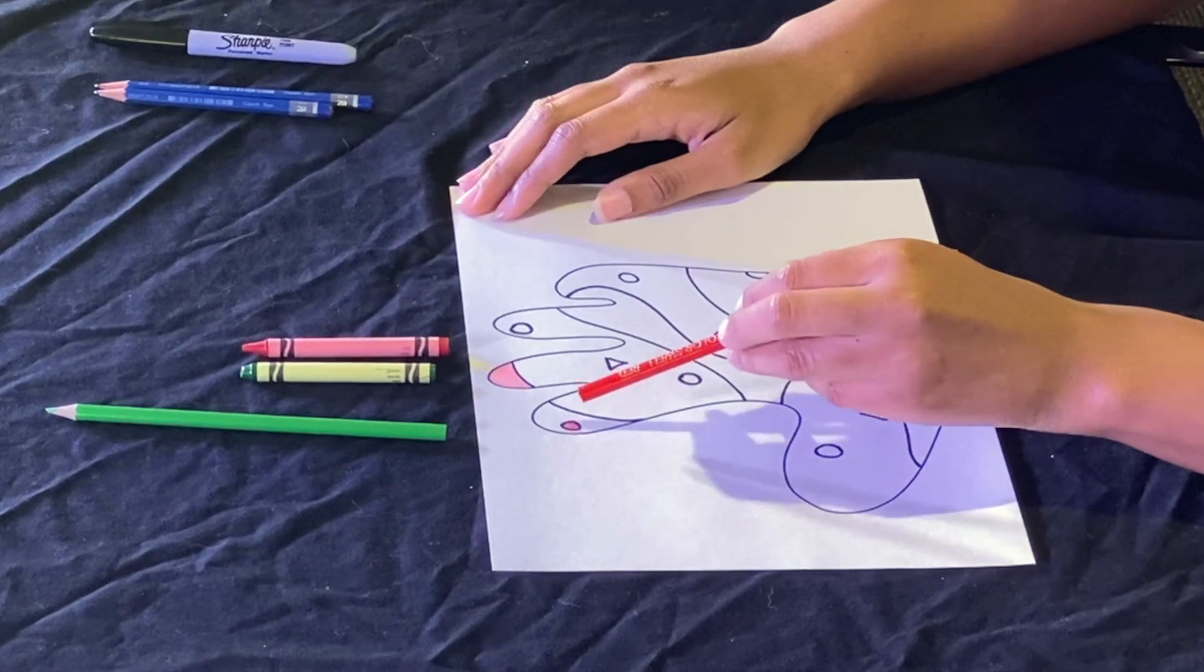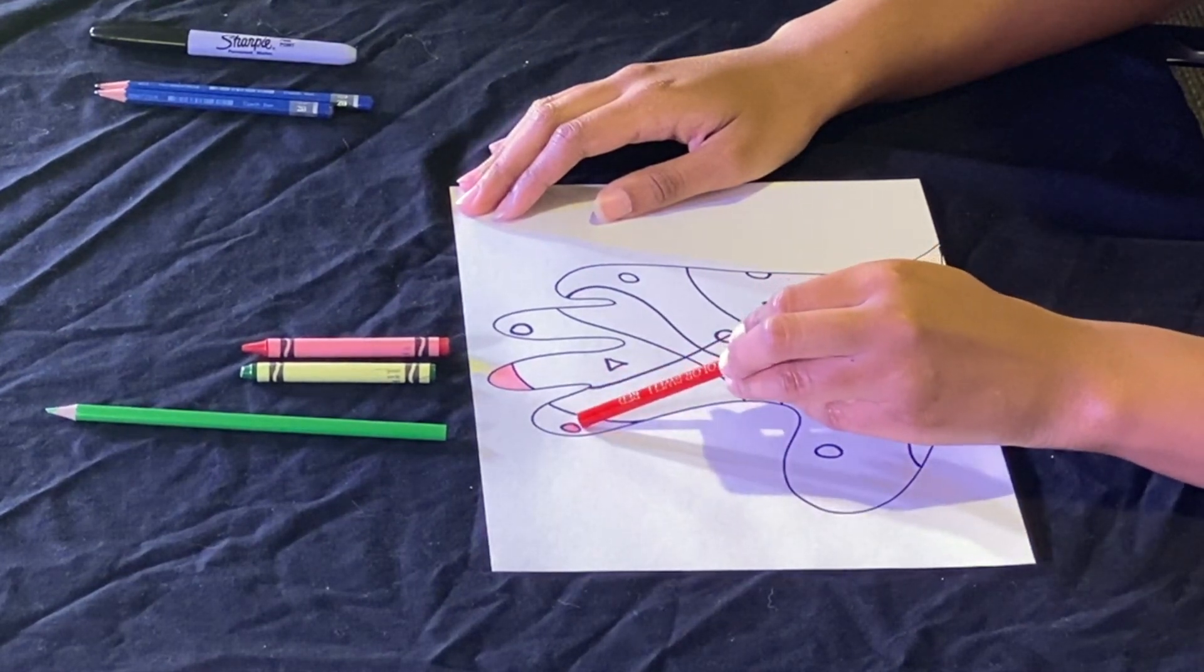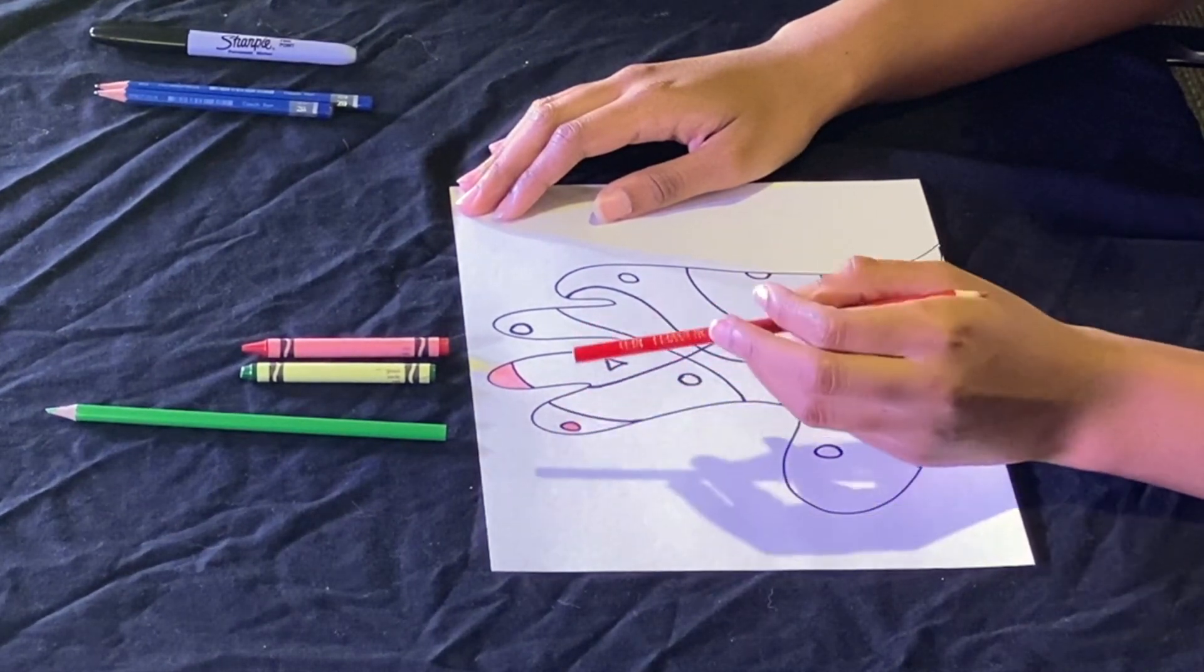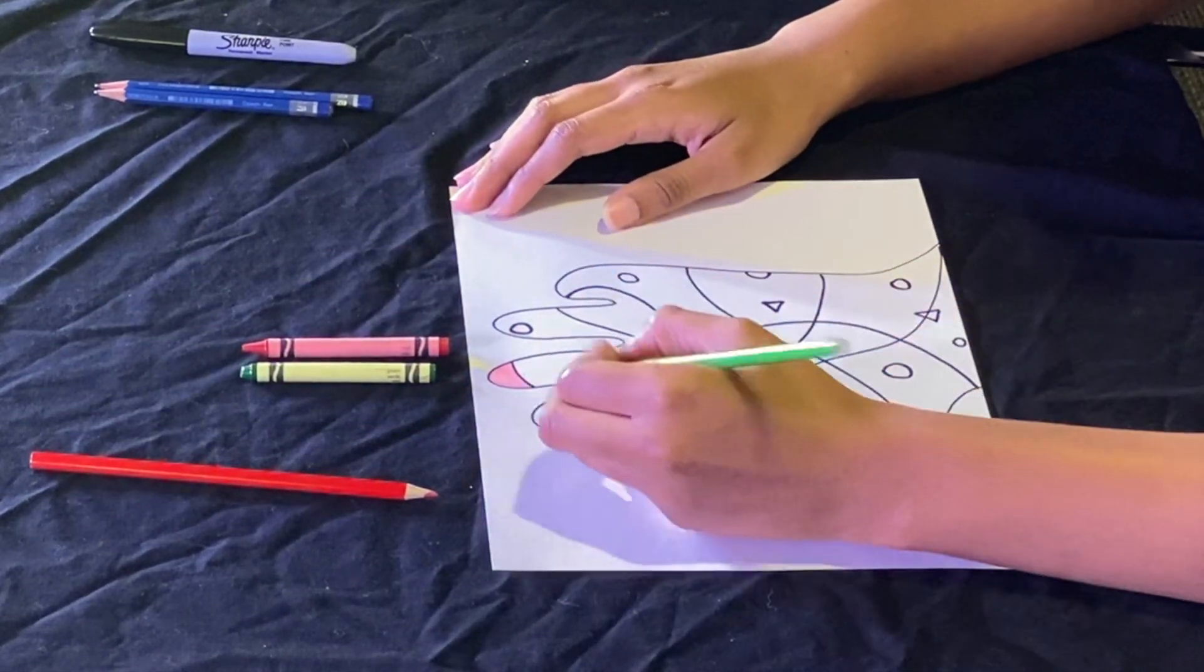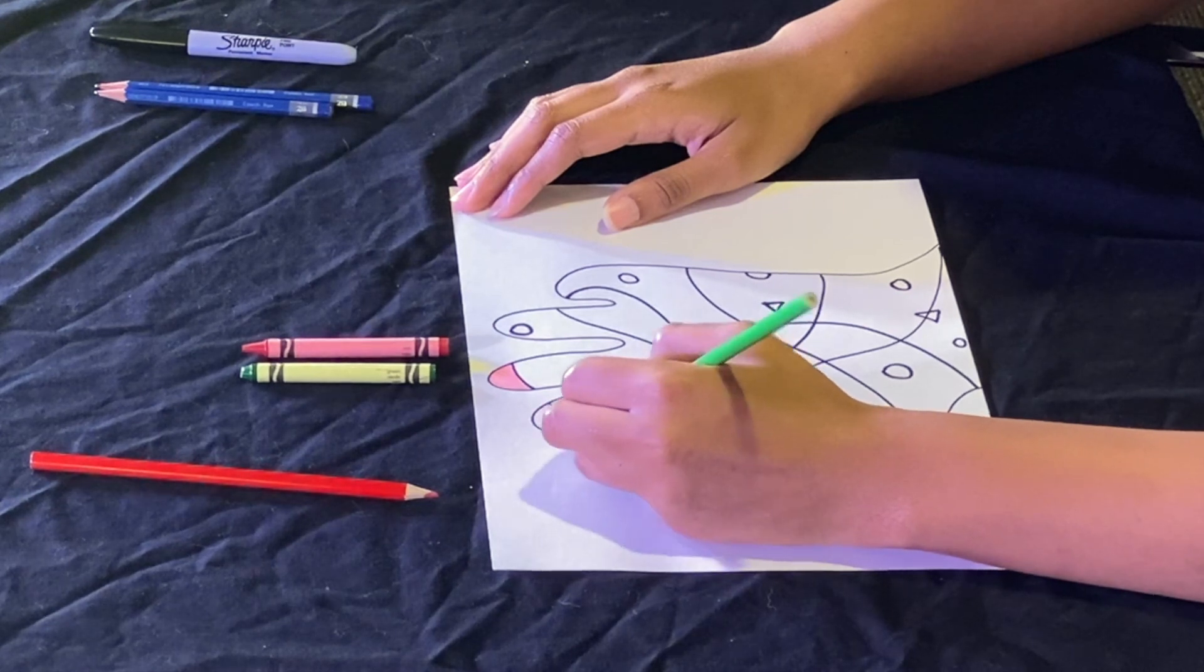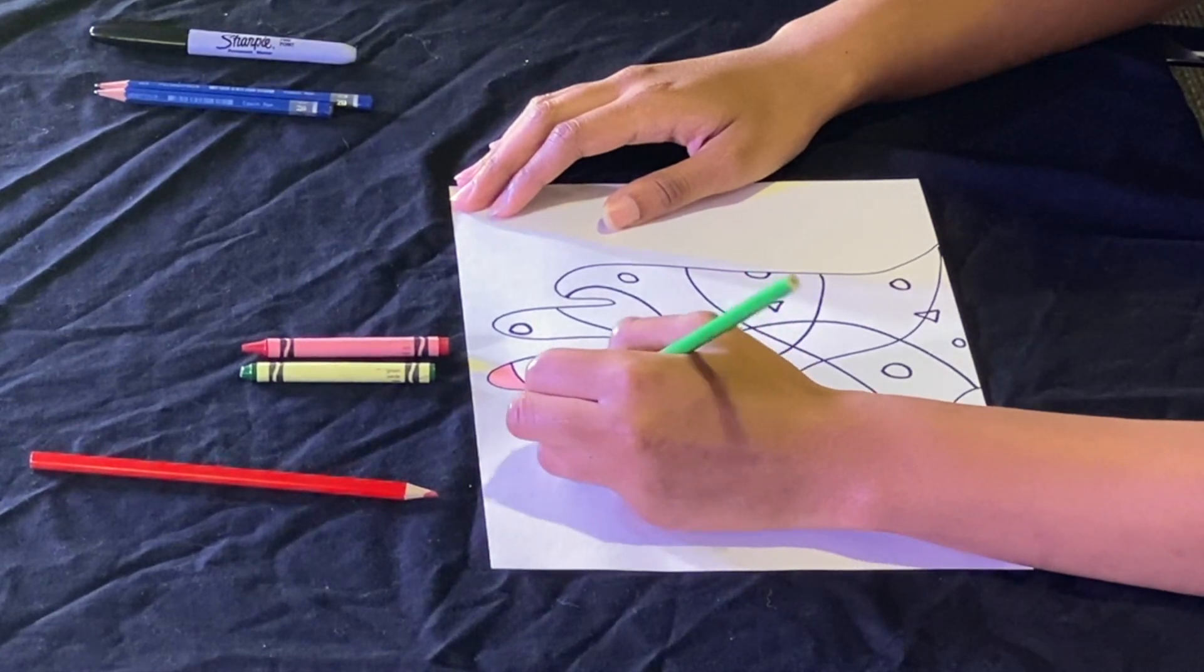And I think what's fun about patterns is you can make it how you want to make it. If you want to make your shape red and also the space around it red, you can do that. Or you can do like how I'm deciding to do it and to make them different.